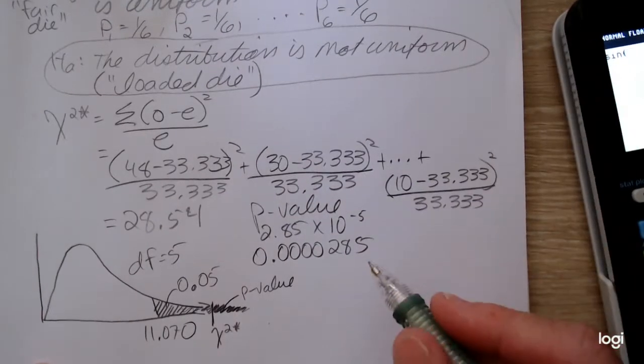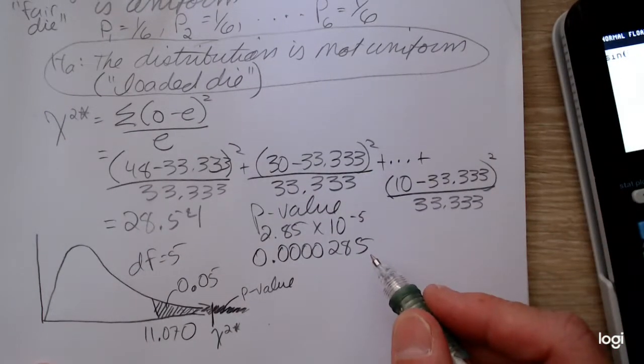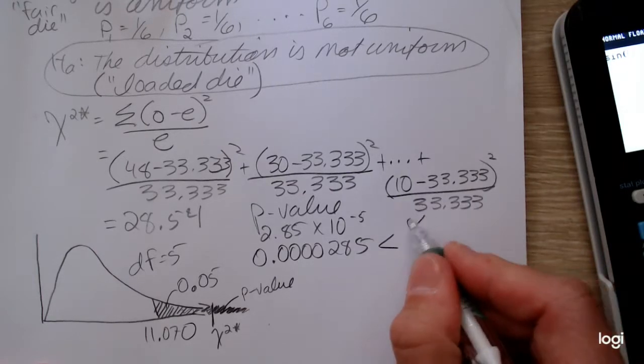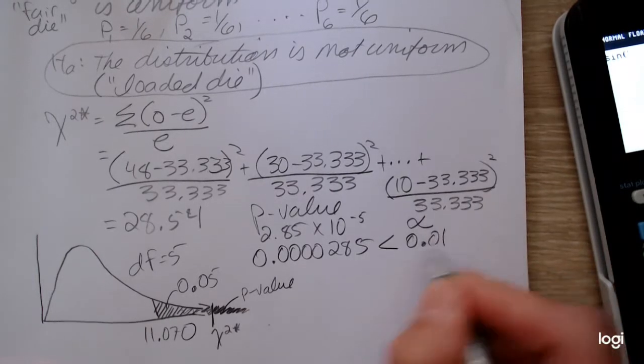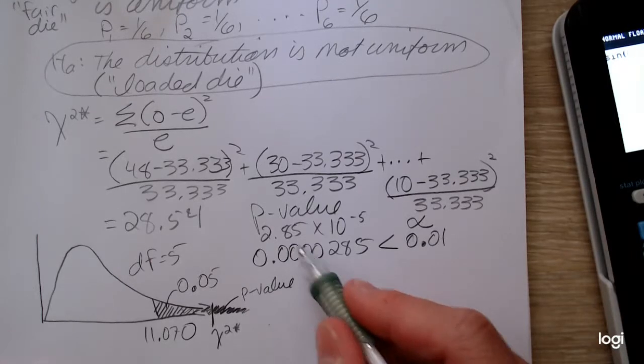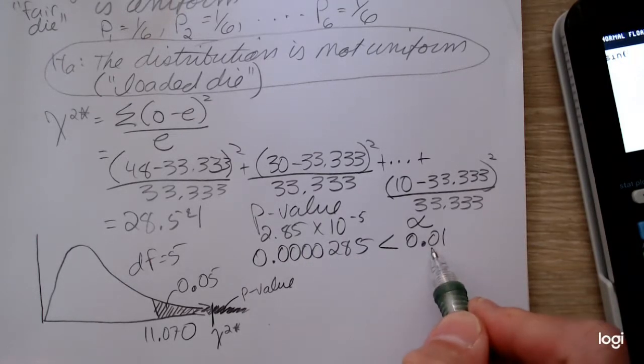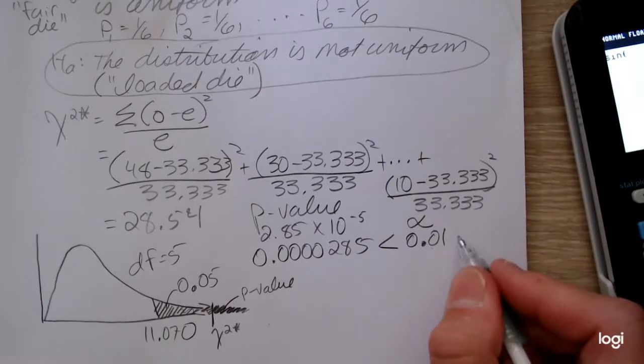Looking at the p-value method, when your p-value is less than your level of significance, my level of significance was 0.01. 2.85 times 10 to the negative 5th is less than 0.01. So the decision is to reject the null.